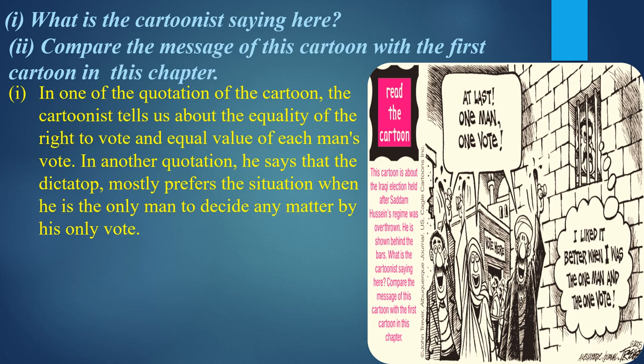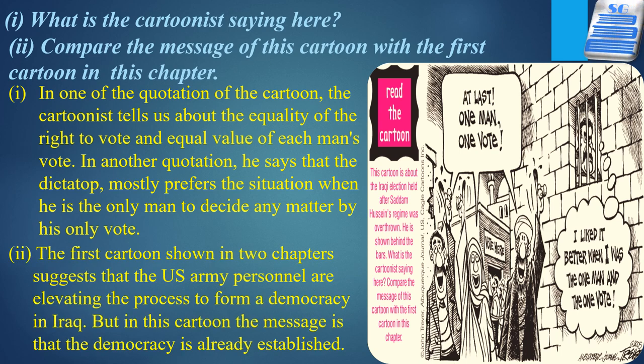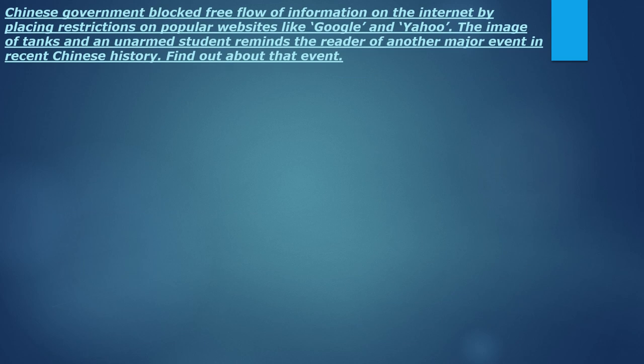In this cartoon, the message is that democracy is already installed. The first cartoon suggested the US army was elevating the process to form a democracy in Iraq. Now, the next topic: the Chinese government blocks the free flow of information on the internet by placing restrictions on popular websites like Google and Yahoo. The image of tanks and unarmed students reminds the reader of a major event in recent Chinese history.